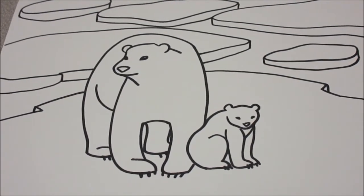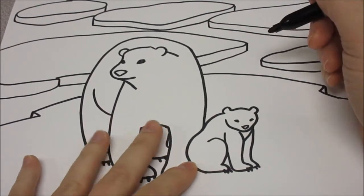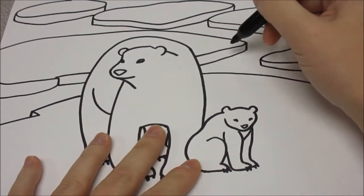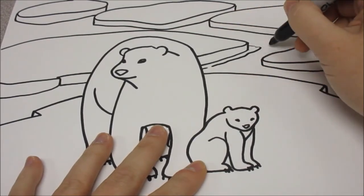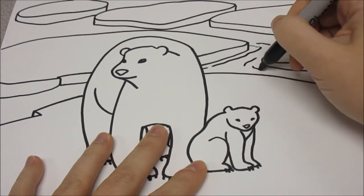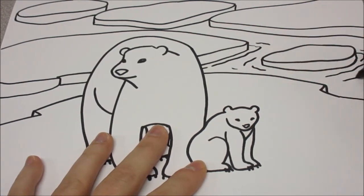Now we've got our polar bears out on the ice. This part in between the ice cubes is going to be water. I'm going to add a little bit of ripples. And that part could get colored in.